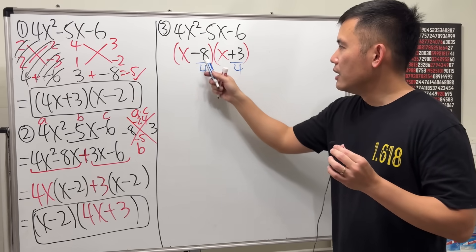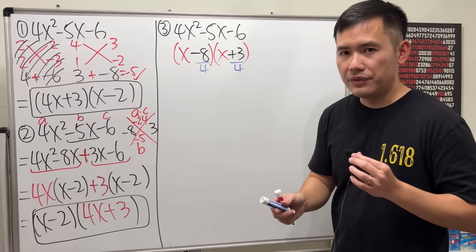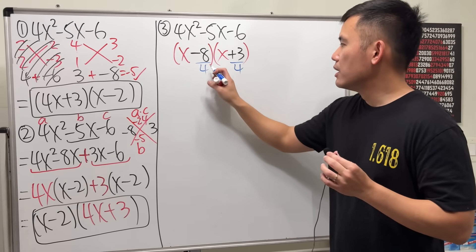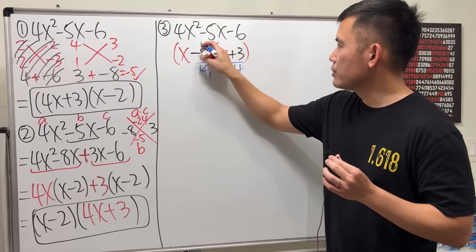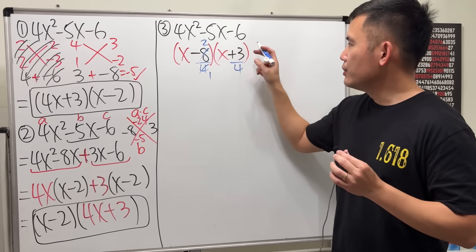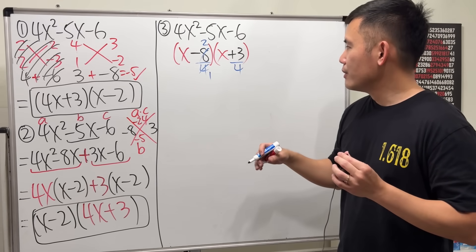Now, ask yourself. Negative 8 divided by 4. Can you reduce that? If it's yes, then do it. 4 goes into 4 one times, and 4 goes into 8 two times. And then, look at this. 3 and 4. Can we reduce that? No.